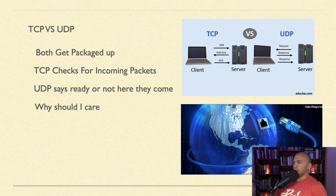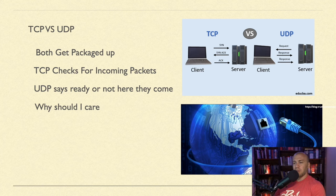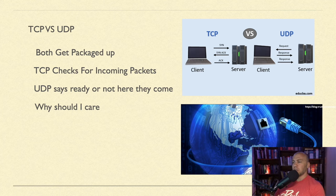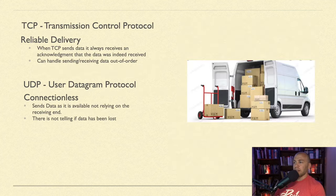UDP just sends a request and sends out the response. It packages up the information and sends it — some packets can get lost and it doesn't really care what the recipient has going on. It simply sends the data.